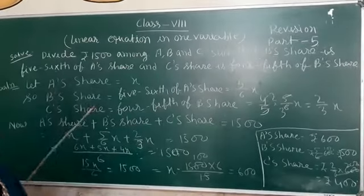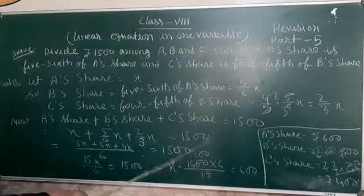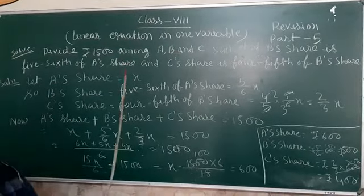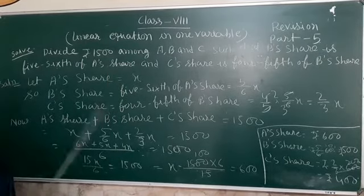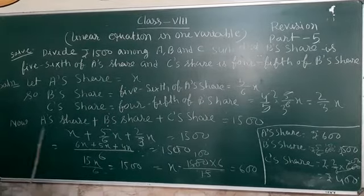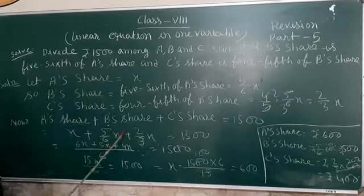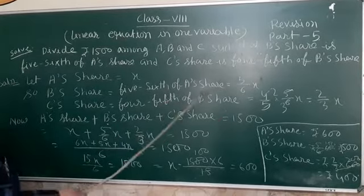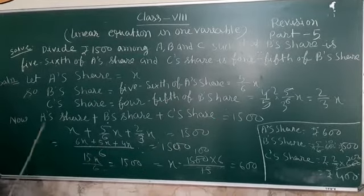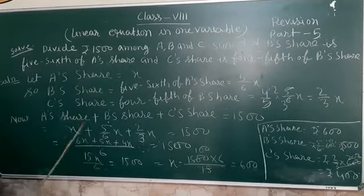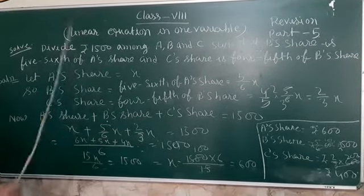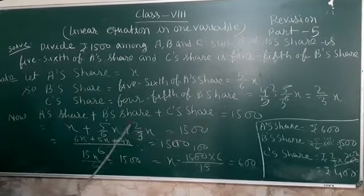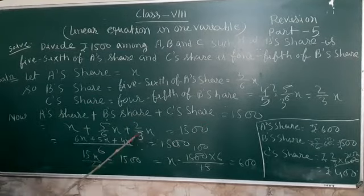Now, we make the equation like this because you have 1500 rupees. So, A's share is X, B's share is 5/6 X, and C's share is 2/3 X.